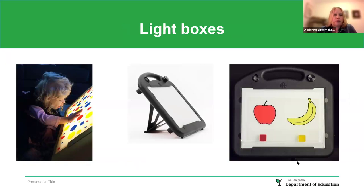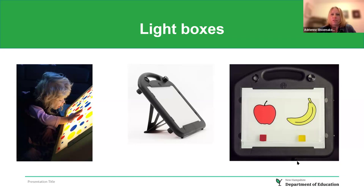Some students benefit from light boxes due to backlighting. The slide shows a girl interacting closely with a light box that has red, yellow, and blue dots. The light box itself can be adjusted to a vertical angle based on student need. An example shows color matching with a red apple, red cube, yellow banana, and yellow cube — all illuminated when the light box is on.